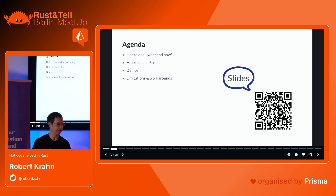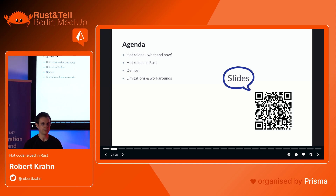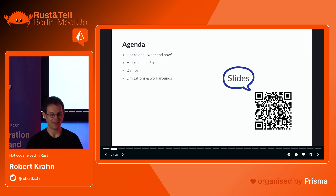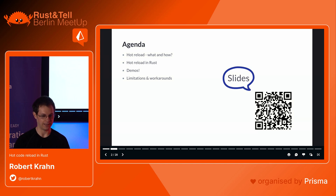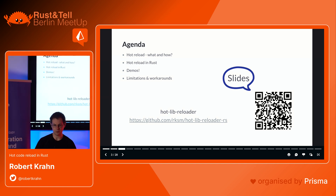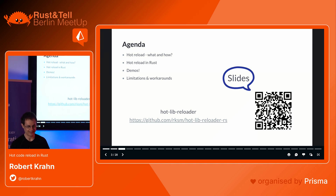If you want to get the slides, you can scan that little QR code - there are a lot of links on there. In this talk I want to cover: what is hot code reload, how does it work in Rust, a demo of how you can build something, the limitations of that approach, and examples and patterns of how you can use it. This talk presents the hot-lib-reloader crate that you can install via Cargo or find on GitHub.